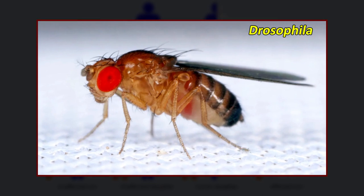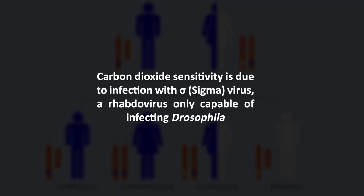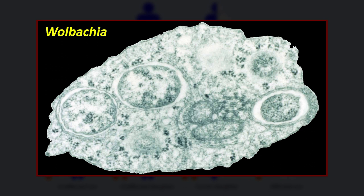Another example is in Drosophila, where heritable traits resulting from infection with foreign particles have also been identified. Wild-type flies normally fully recover after being anesthetized with carbon dioxide; however, certain lines of flies die after exposure to the compound. This carbon dioxide sensitivity is passed from mothers to their progeny and is due to infection with sigma virus, a rhabdovirus only capable of infecting Drosophila. Recent research has also shown that the Wolbachia bacterium is capable of inserting its genome into that of its host.